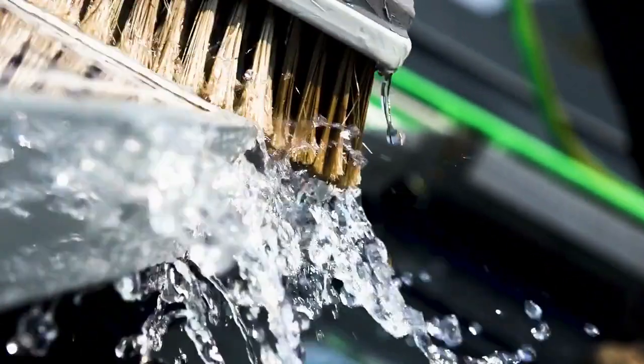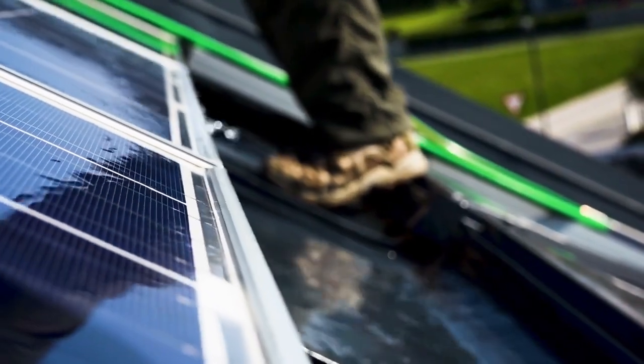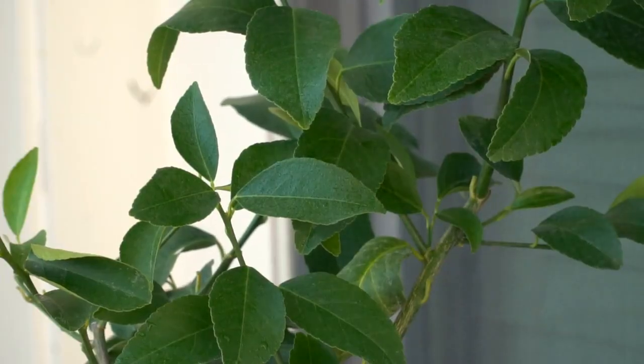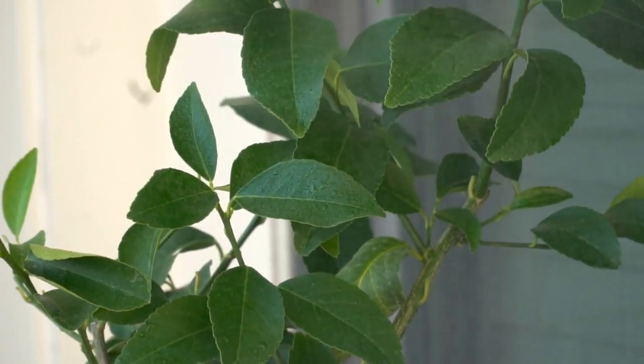As water flows onto the solar cell, it has a dual effect. Firstly, it cools down the solar cell, enhancing its efficiency. Imagine how a plant's leaves release water to cool themselves through evaporation—this process is replicated in the PV leaf.